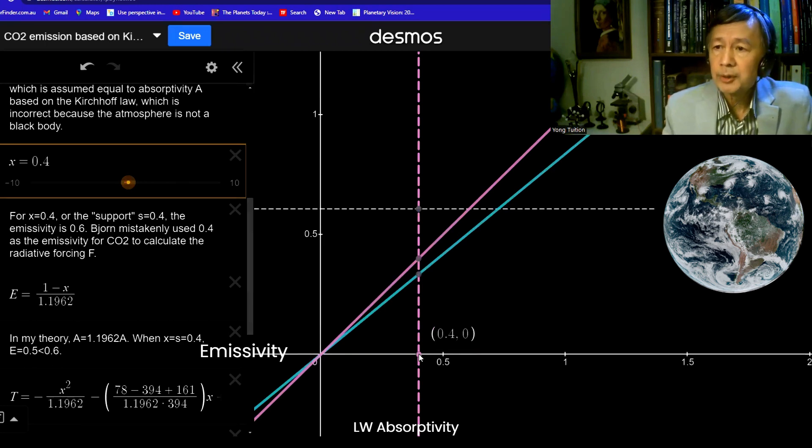according to Kirchhoff's law, the emissivity is also 0.4 or 40%. But my modified Kirchhoff equation suggests that the emissivity is slightly lower, 0.33 or 33%. So this is a basic assumption made in my research work published in 2021.